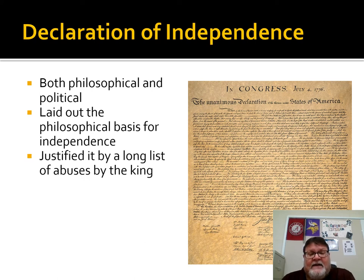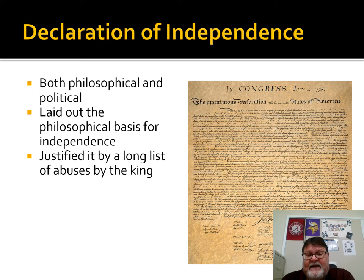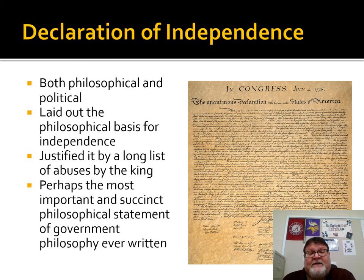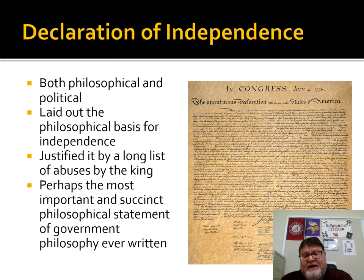In addition, the political side is the justification. There's a long list — some 57 separate things of that nature — listing abuses by the king that compel the colonies to separate. So it lays out the philosophical basis, and then it justifies it by listing a huge amount of things the king has done, so much so that separation becomes necessary. It is perhaps the most important and succinct philosophical statement of government ever written, and your homework assignment also covers some of its most important parts.